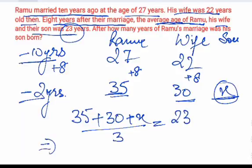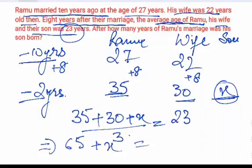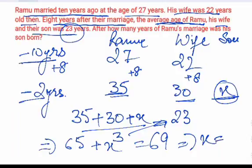So this means 65 plus X — since 35 plus 30 is equal to 65 — so 65 plus X is equal to 3 into 23, which comes out to be 69. So we get X equal to 69 minus 65, that is 4.